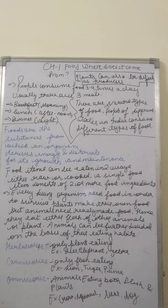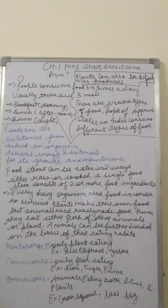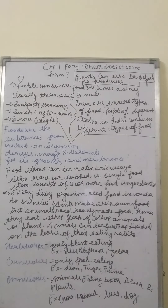We can eat food items in two ways: either raw or cooked. Cooked food consists of three or more ingredients. When we put three or more food items together we get a single food item. For example, to make rice and dal, we need pulses, water, salt, oil, ghee, and spices.